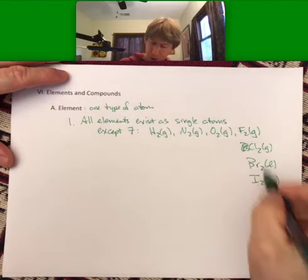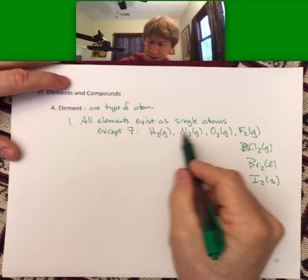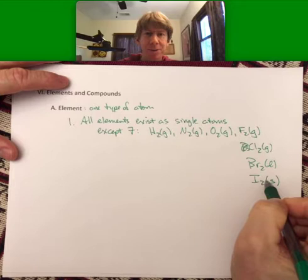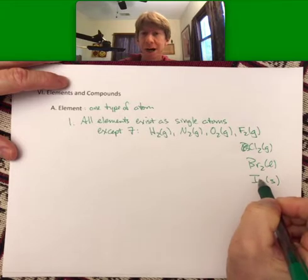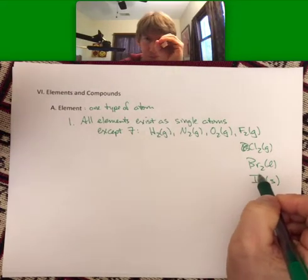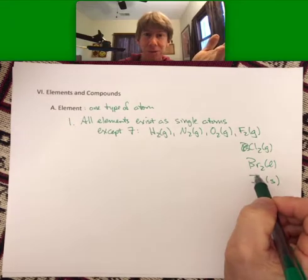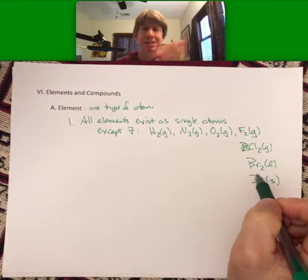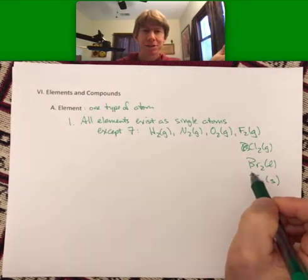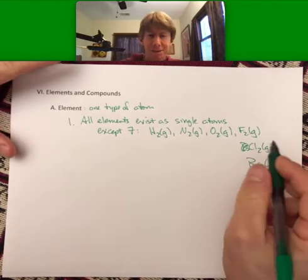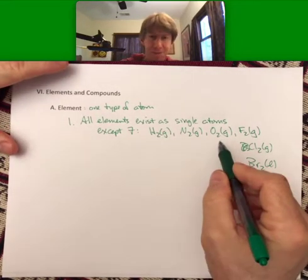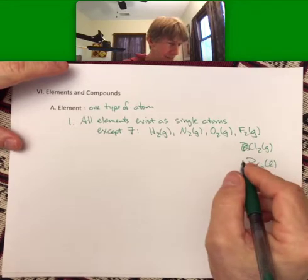These are going to be important. When these seven elements appear in chemical reactions, they will appear diatomic. There will be times when we refer to oxygen as just O, but not in chemical reactions. The oxygen gas that we breathe is O2.